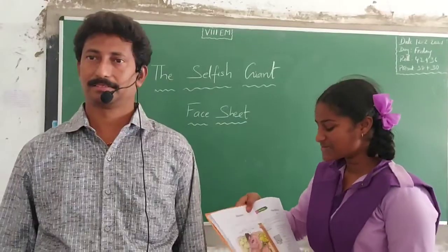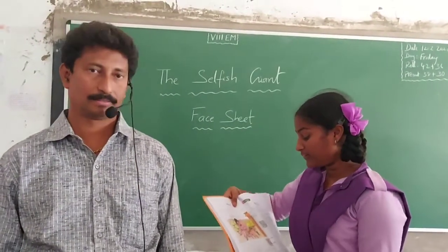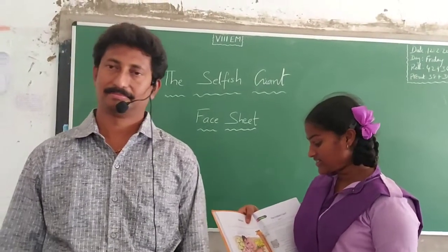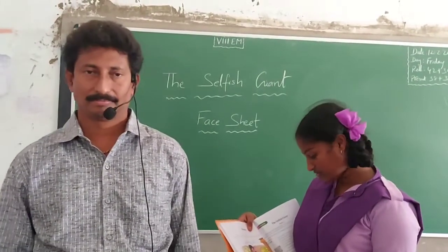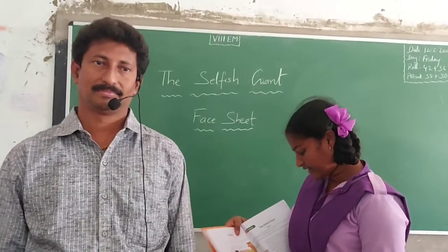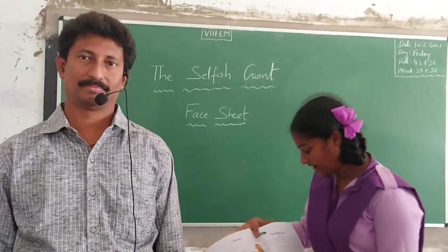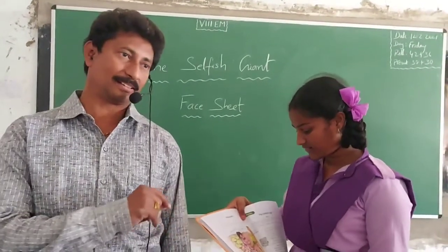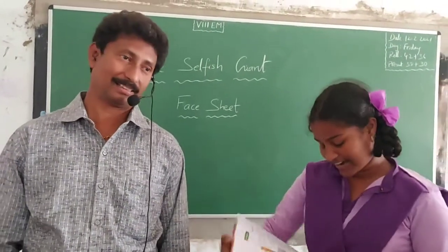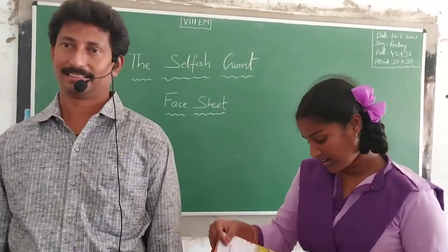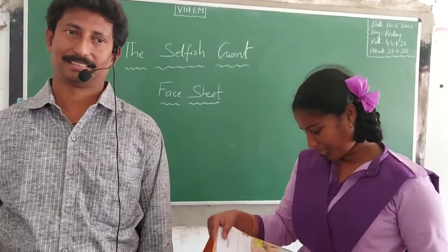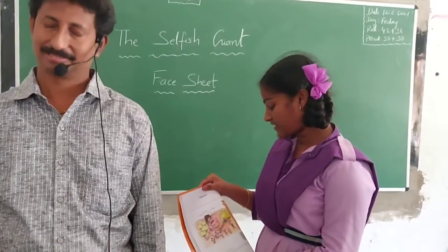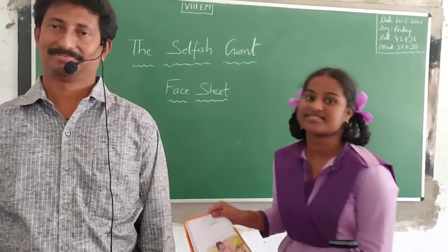And last but not least, Sushmita. In this picture, there is a giant playing with children. There are fruit trees and a ladder. There is a mountain far away from this place and there are clouds.